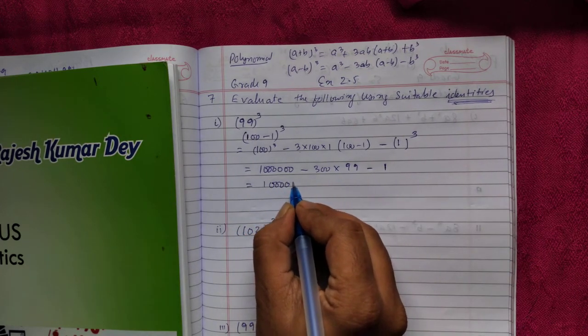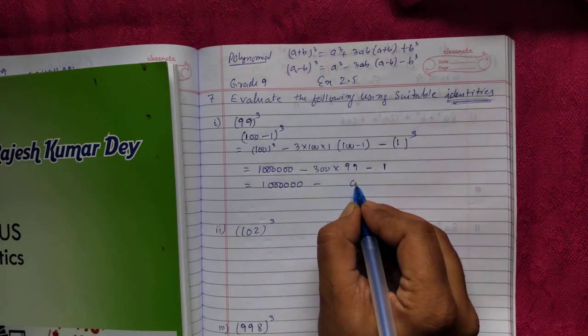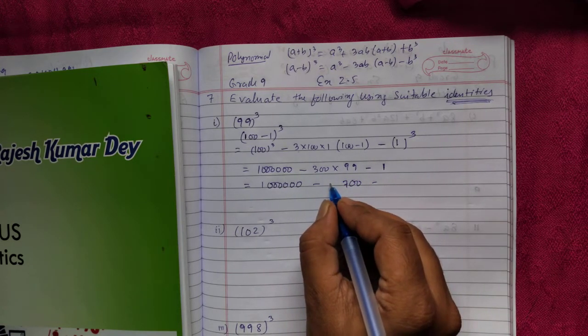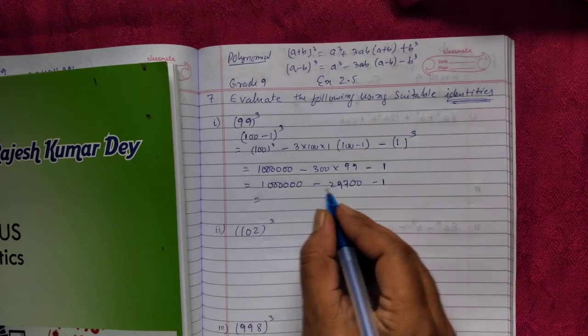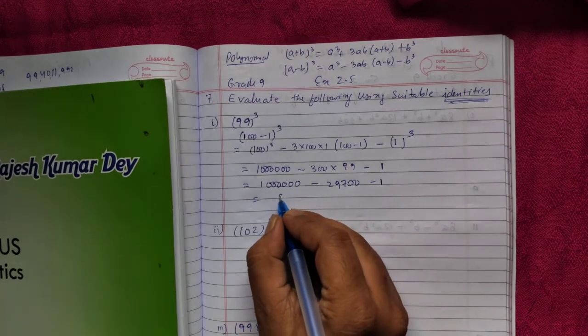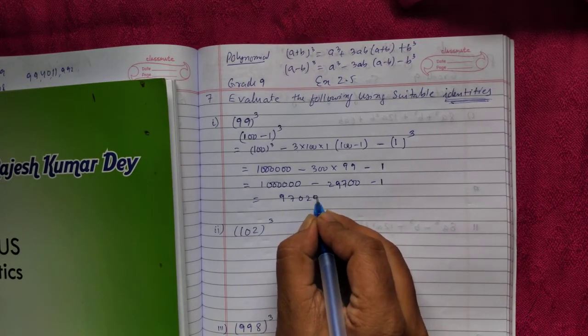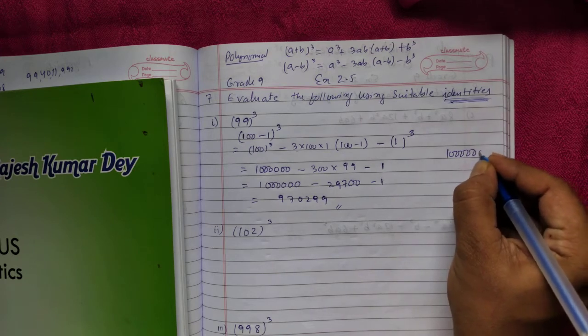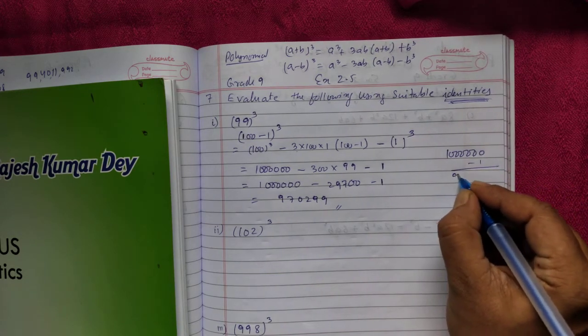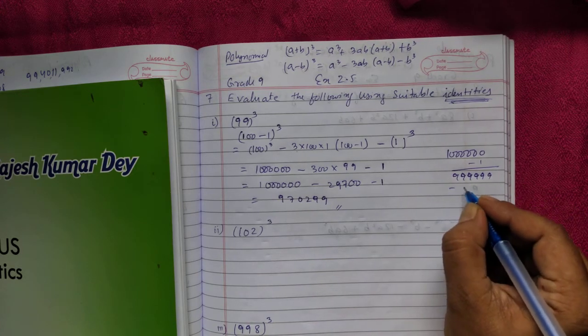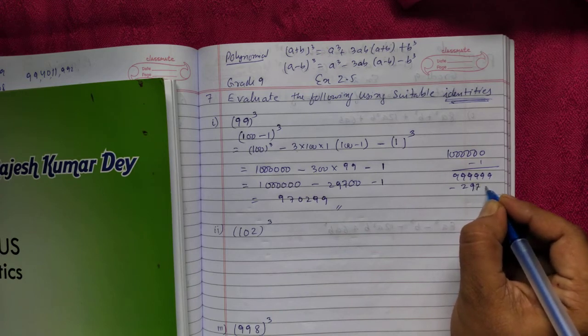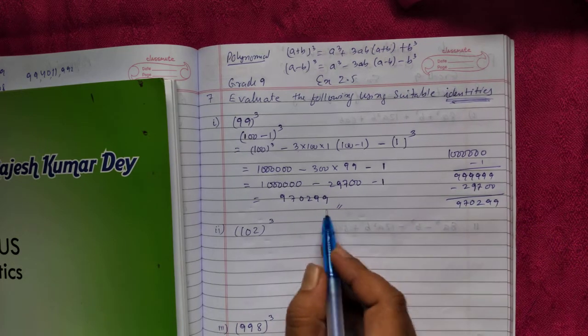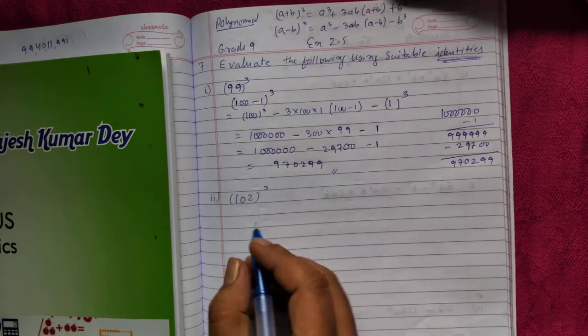1000000 minus, you multiply this: 3 times 9 is 27, so 29700. If you minus these two again minus 1 you'll get 970299. So this is the answer - you have to subtract like that.